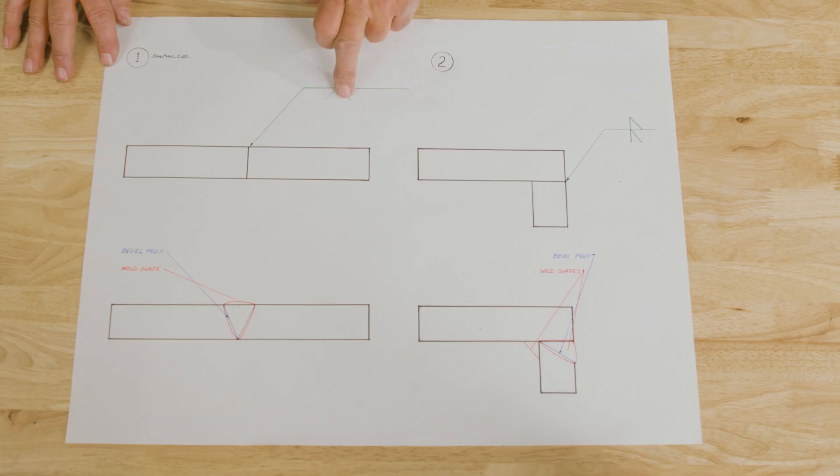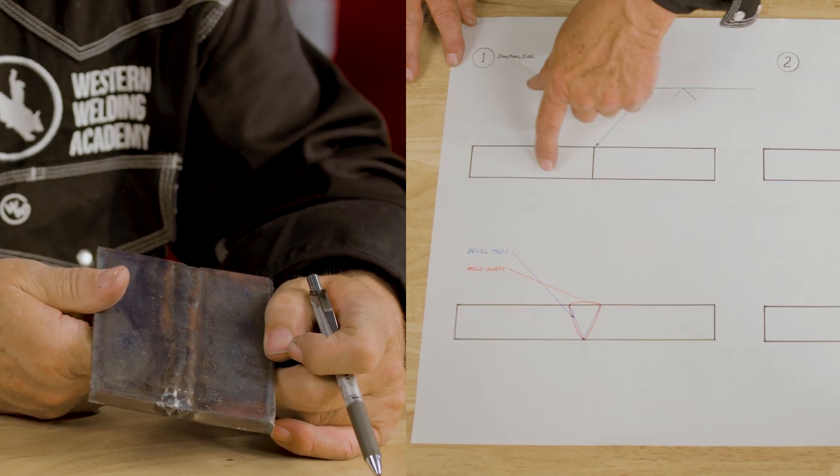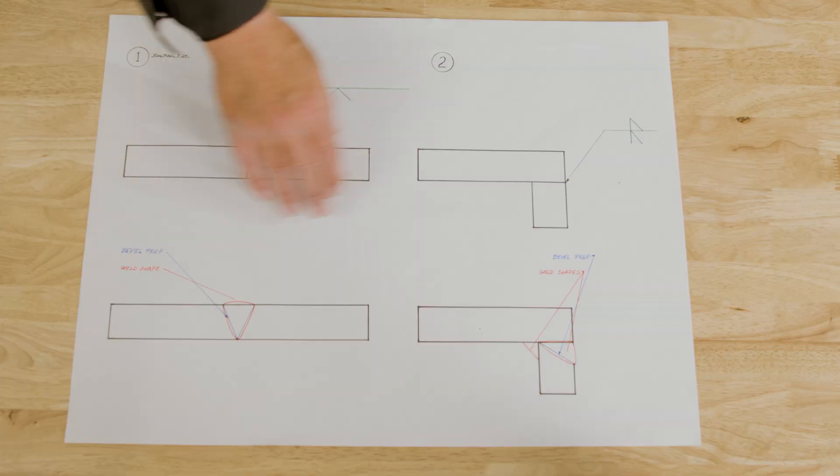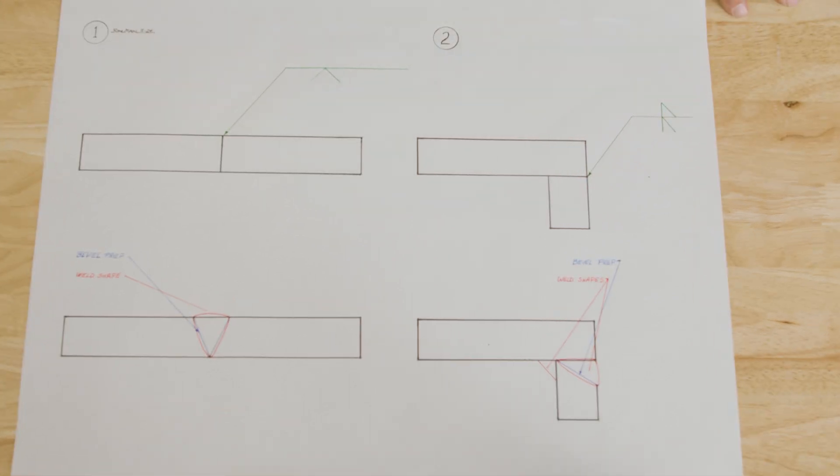On this one, the arrow side is where all of the beveling is done. You can see that's what the case is here. The other side has no preparation or no weld there. Every drawing has an indication of what you have to do to prep the bevel or the iron, and it also shows what the weld shape should look like when you're done.